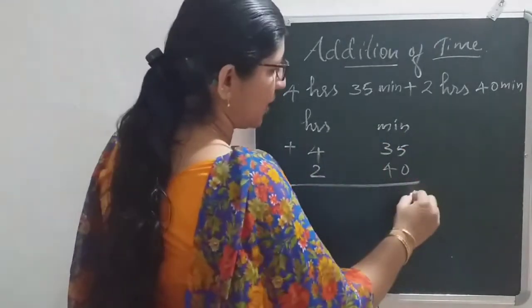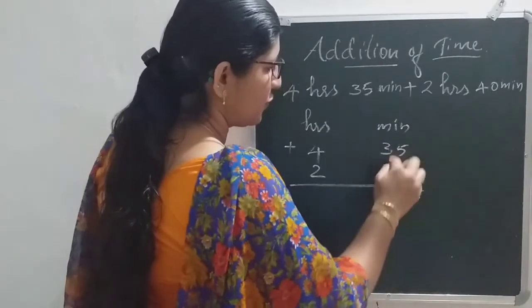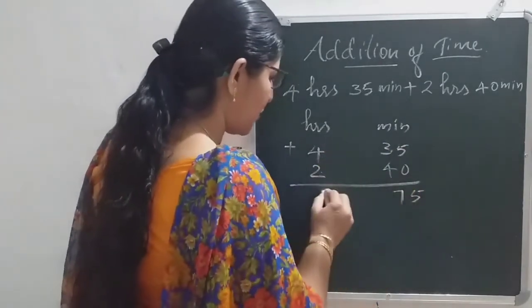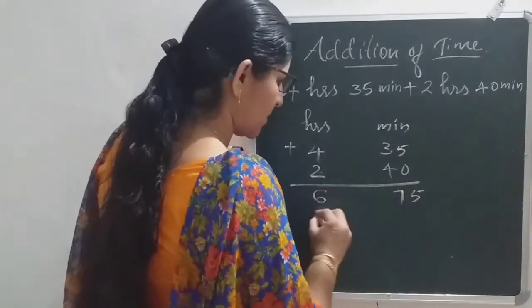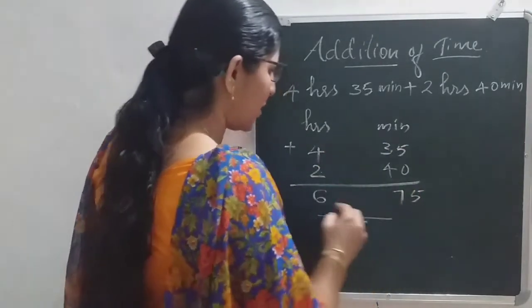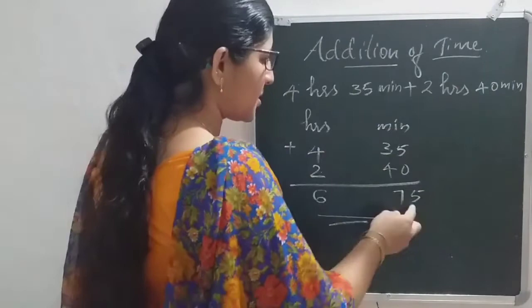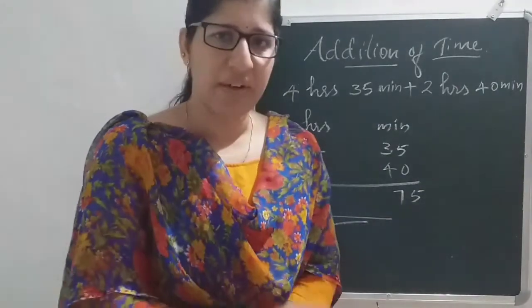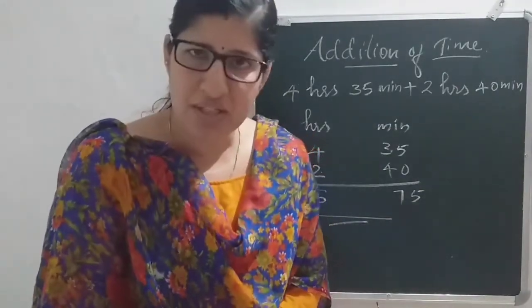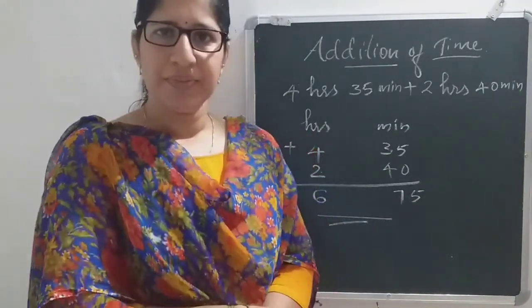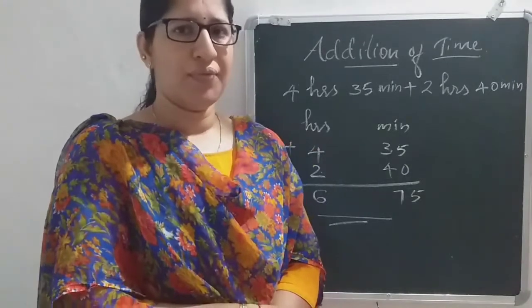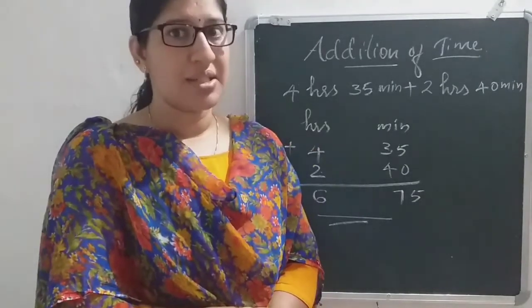Then you add: 5 plus 4 is 9 — wait, 35 plus 40: 5 plus 0 is 5, and then 3 plus 4 is 7 in minutes; 4 plus 2 is 6 in hours. So you get 6 hours 75 minutes. But is there 75 minutes on the clock? We only go up to 59 minutes.